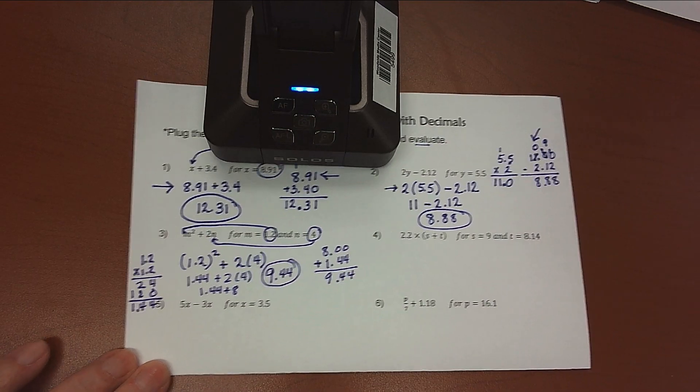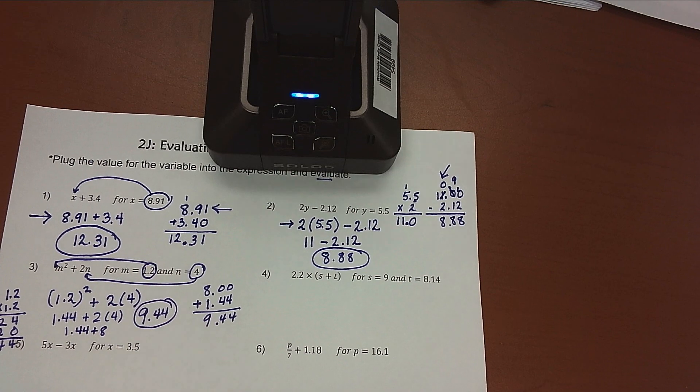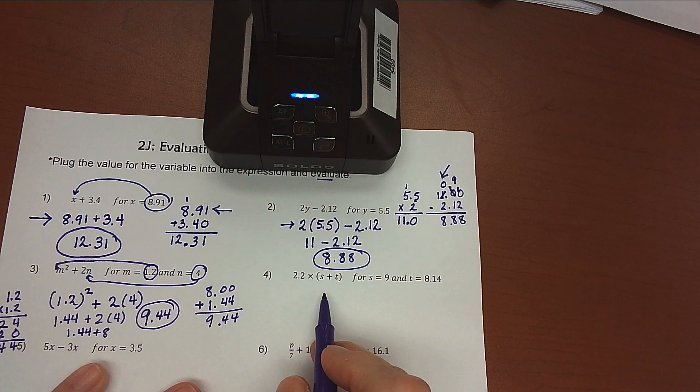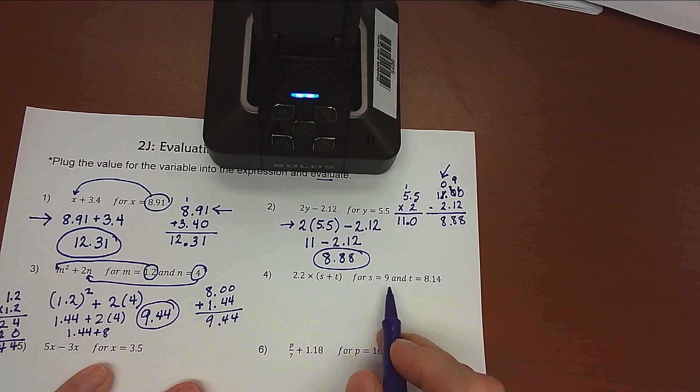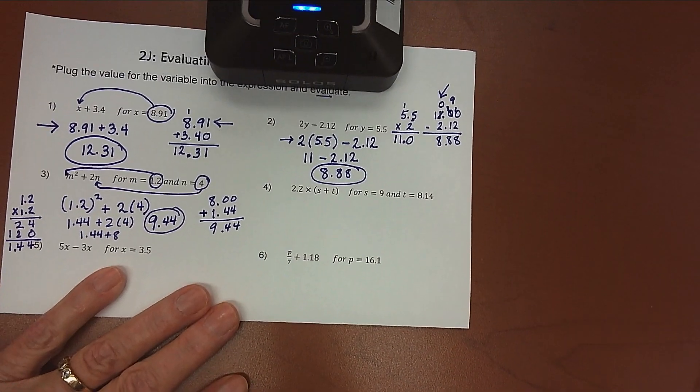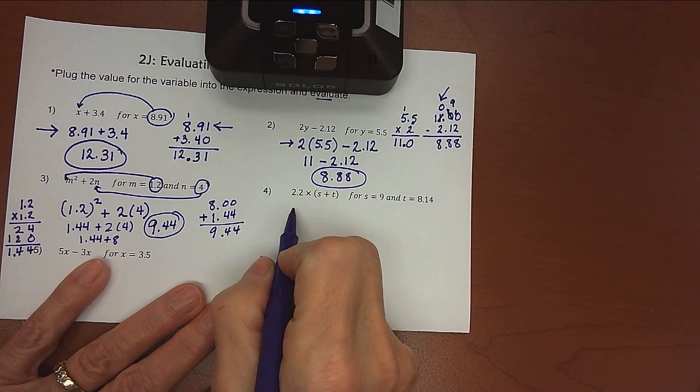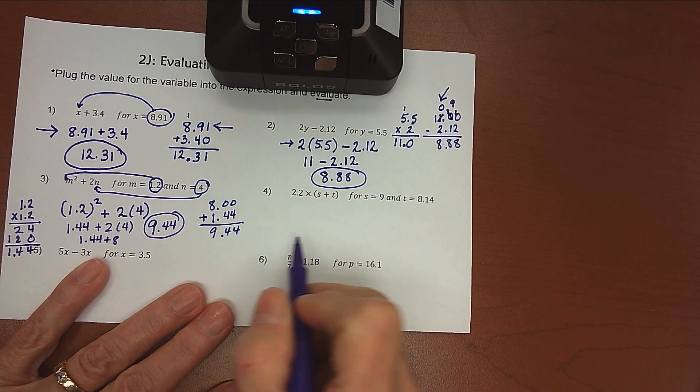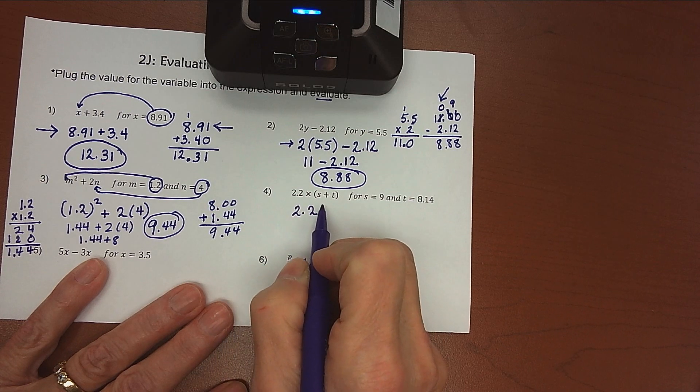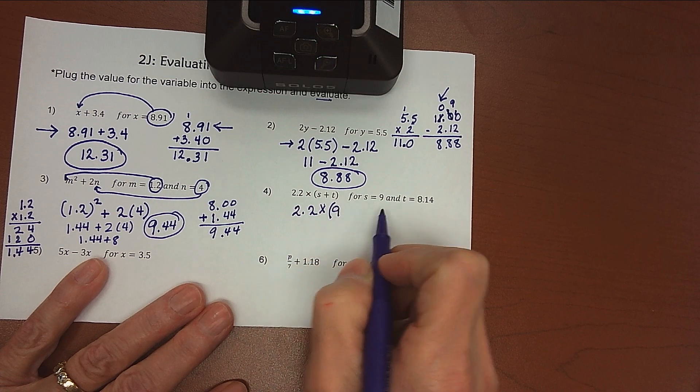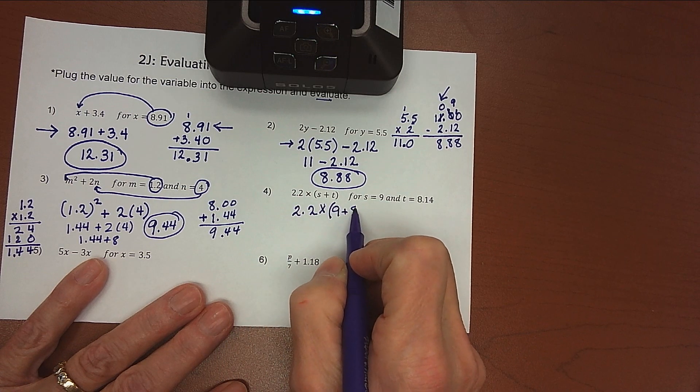All right. Let's look at the next problem here, number 4. Number 4 is 2.2 times the sum of S and T. And over here it tells us that S is 9 and T is 8.14. And so we're going to rewrite that problem, substituting the 9 in for the S and the 8.14 in for the T. So 2.2 times S is 9 and T is 8.14.